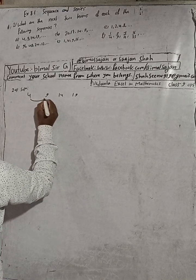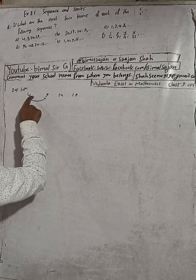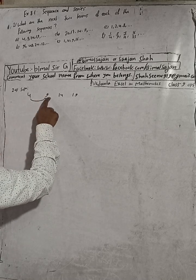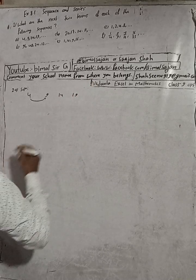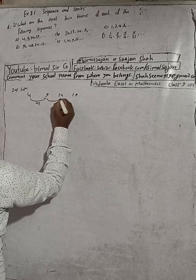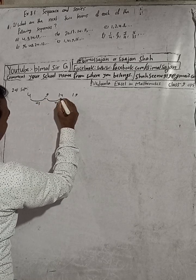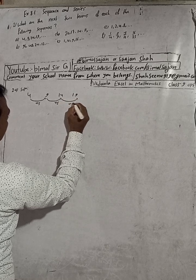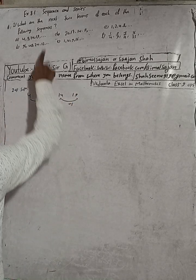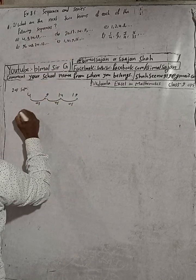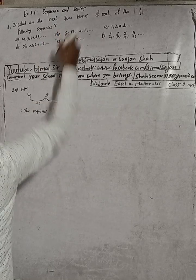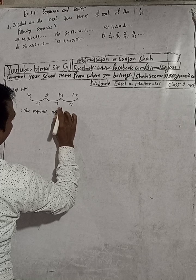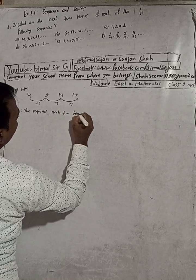We observe how much is increased here. From 4 to 9, we add 5. From 9 to 14, we add 5 again. From 14 to 19, we add 5. So the common difference is plus 5. Therefore the required next two terms are: